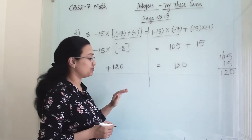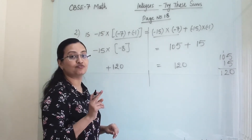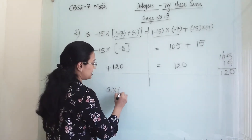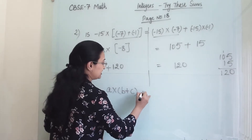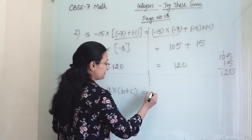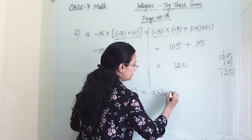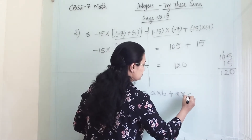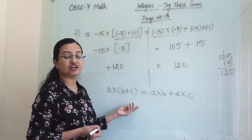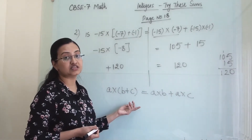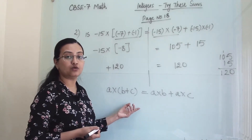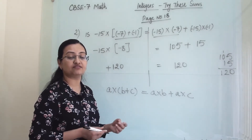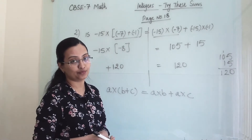This is based on the properties of multiplication of integers: a into b plus c gives us a into b plus a into c. We have already discussed this property earlier. If you have any doubt about this property, please check the description — I have given the link in the description below.